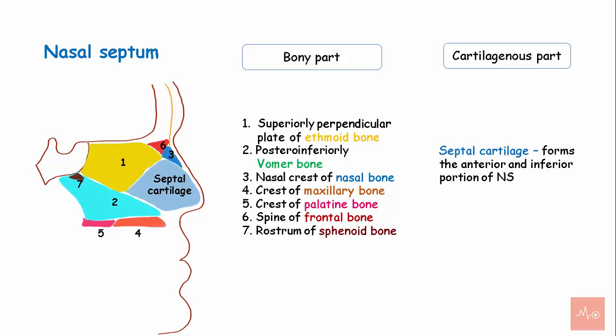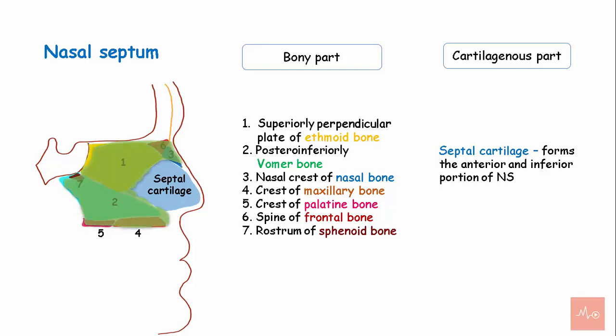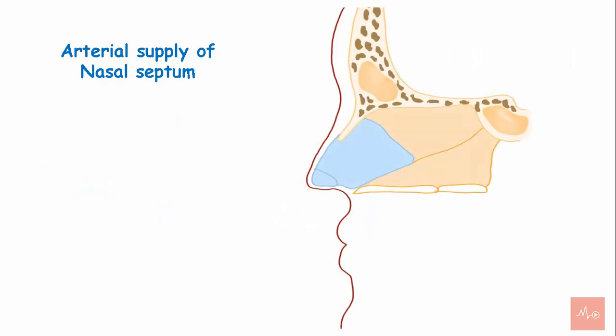The cartilages that make up the nasal septum are the septal cartilage, which forms the anterior portion of the nasal septum. This is the flexible portion of the nose that can be touched and felt easily. The bony part forms the superior, posterior, and inferior part of the nasal septum, while the cartilaginous part forms the anterior part.